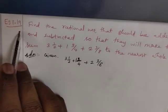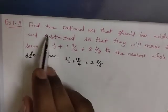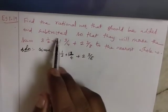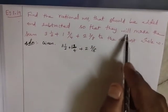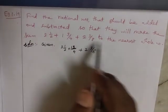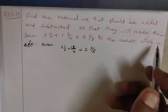Example 1.19. Find the rational numbers that should be added and subtracted so that they will make the sum 3 1/2 + 1 3/4 + 2 3/8 to the nearest whole number.